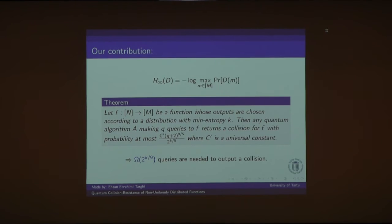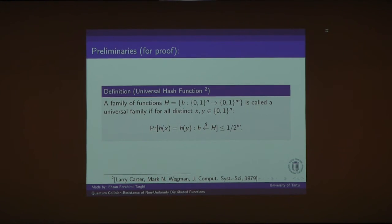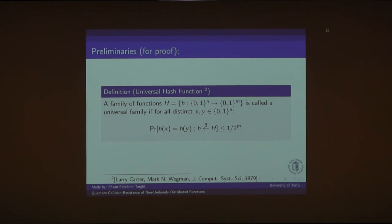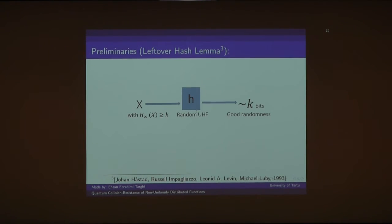I would like to give you a proof of our result, just a sketch. But I need some preliminaries and some basic definitions and lemmas that we have used. So here is the first one, universal hash function. A family of functions is called a universal family if for two distinct X and Y, when we choose H randomly, then the probability that they collide is very small, 1 over 2 to the power M.